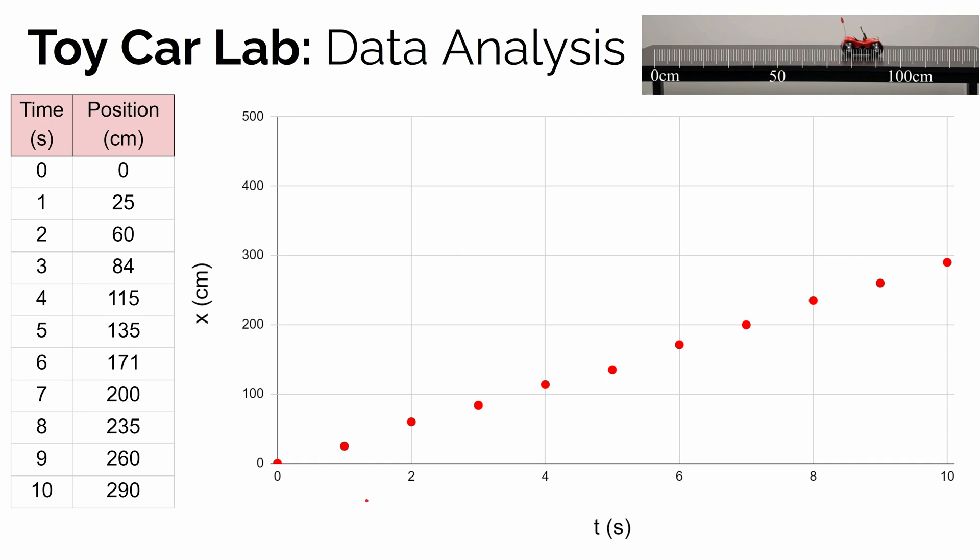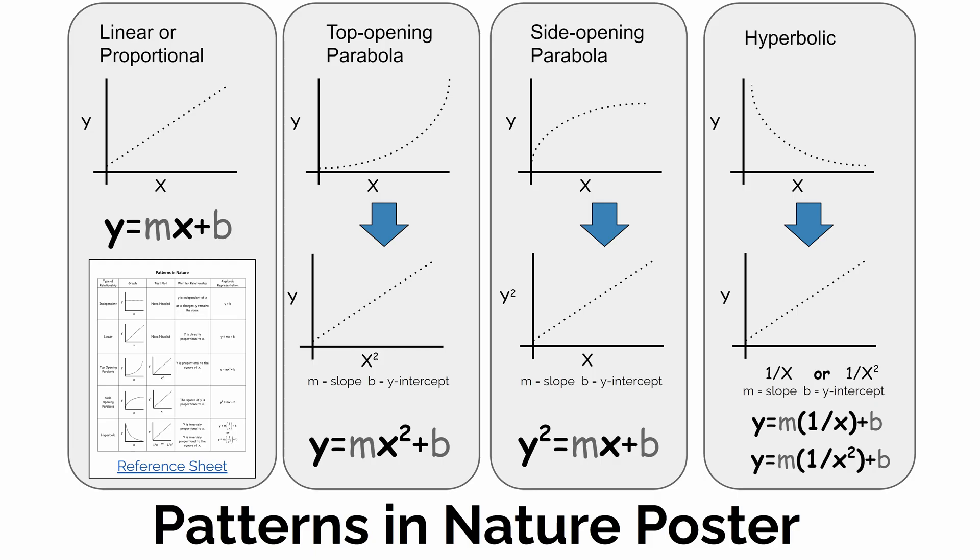Once you make your position versus time graph, the first question you want to answer is, what's the shape of that graph? What's the pattern we see in our graph? To help you think through what are the common patterns that come up over and over again when we do investigations in physics or in science in general, when we find out how one variable affects the other, you should have a Patterns in Nature reference sheet. Here, they're right on the slide here. These are four different types of trends that come up over and over again.